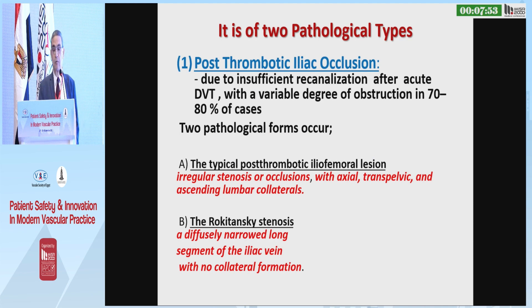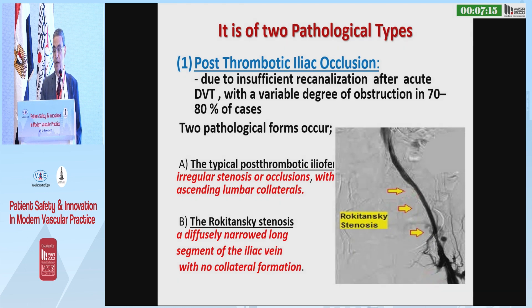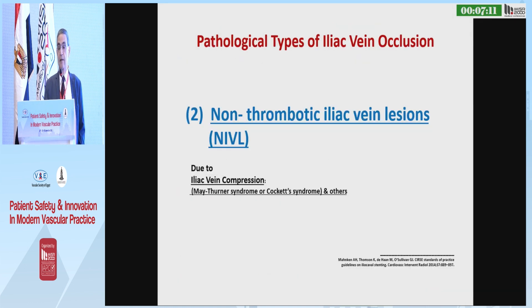Iliac vein occlusion is of two types. The first is post-thrombotic iliac occlusion, due to insufficient recanalization after acute DVT, with a variable degree of obstruction in 70 to 80% of cases. It has two pathological forms: the typical post-thrombotic iliofemoral lesion with irregular stenosis or occlusion with axial, transpelvic, and ascending lumbar collaterals; or a localized stenosis that is a diffusely narrowed long segment of iliac vein with no collateral formation.